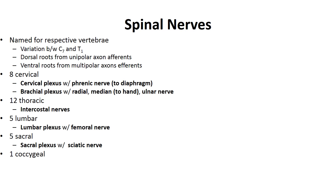The cervical plexus consists of spinal nerves C1 through C5 and is mostly cutaneous nerves that supply the skin. The phrenic nerve is the most important cervical nerve, innervating the diaphragm for breathing and originating from C3 to C5 — remembered by the mnemonic 'C345 keeps you alive.' The brachial plexus innervates the pectoral girdle and upper limbs and consists of spinal nerves C4 through T1. Its main nerves are the suprascapular, axillary, radial, ulnar, and median nerves.